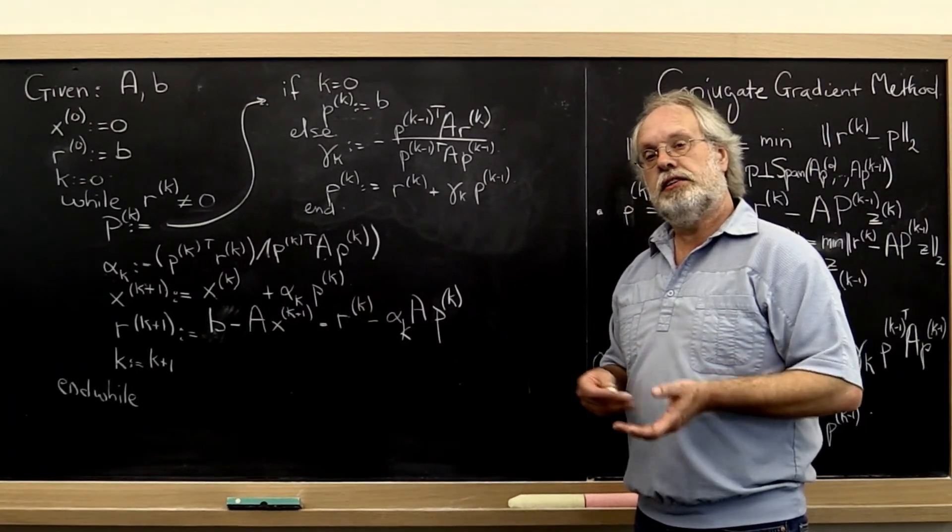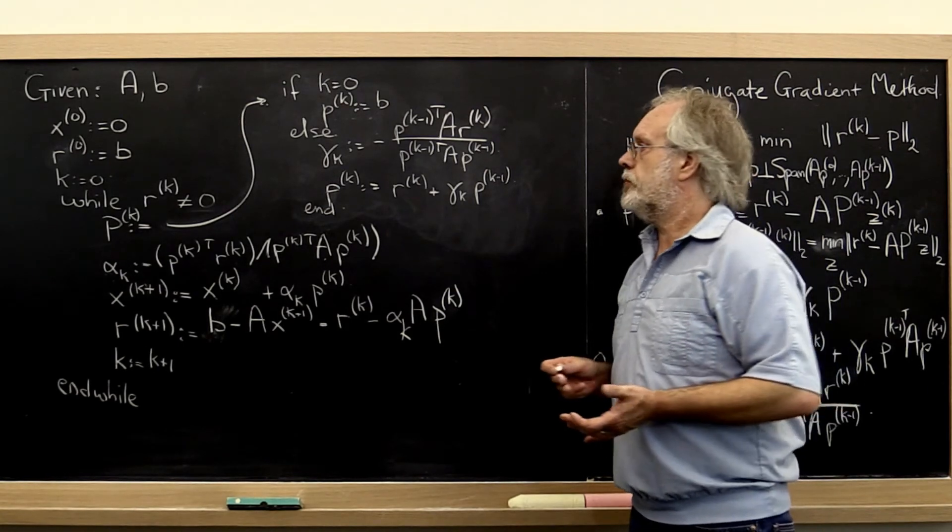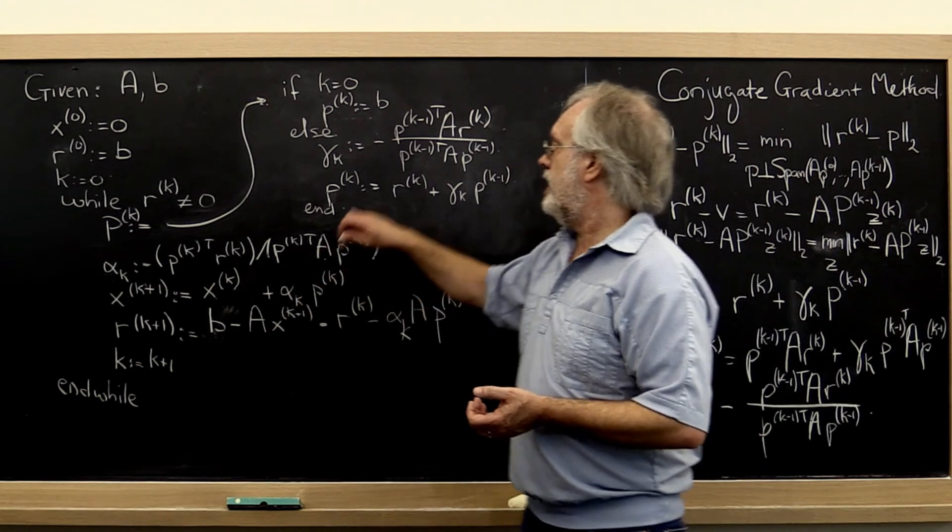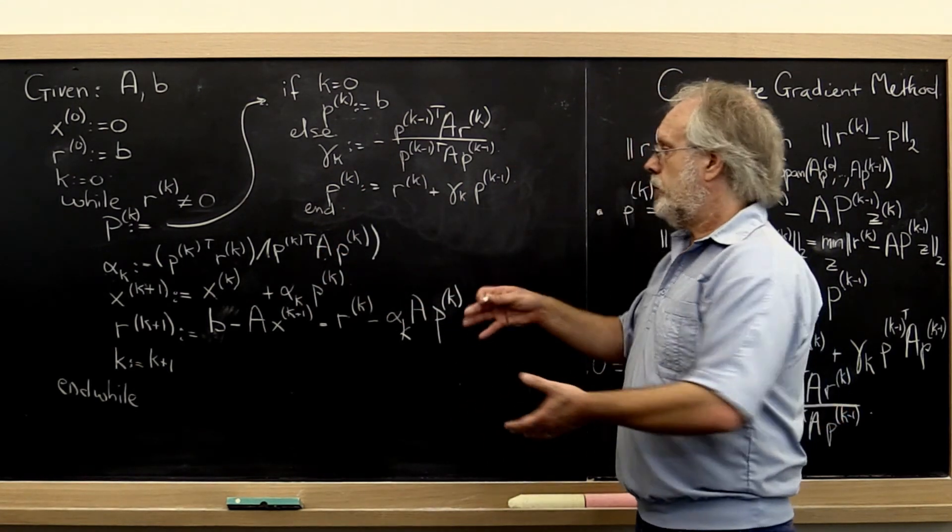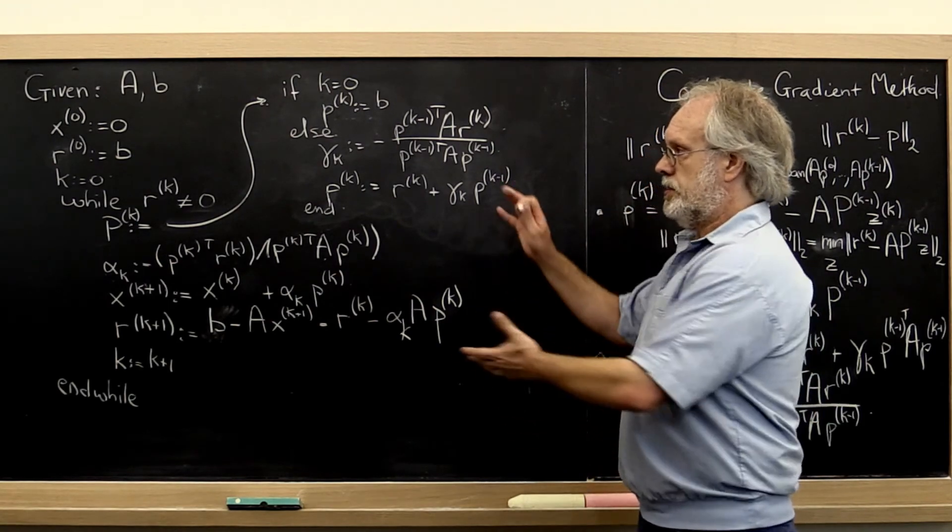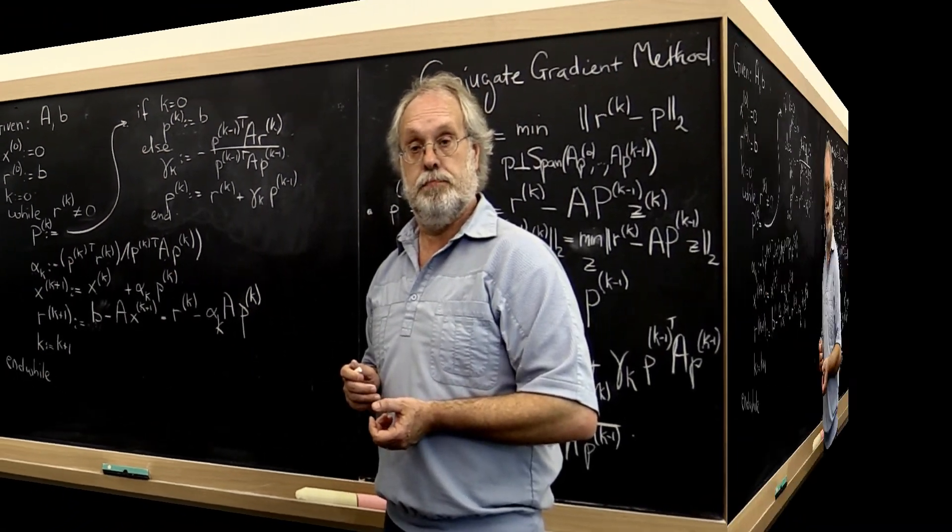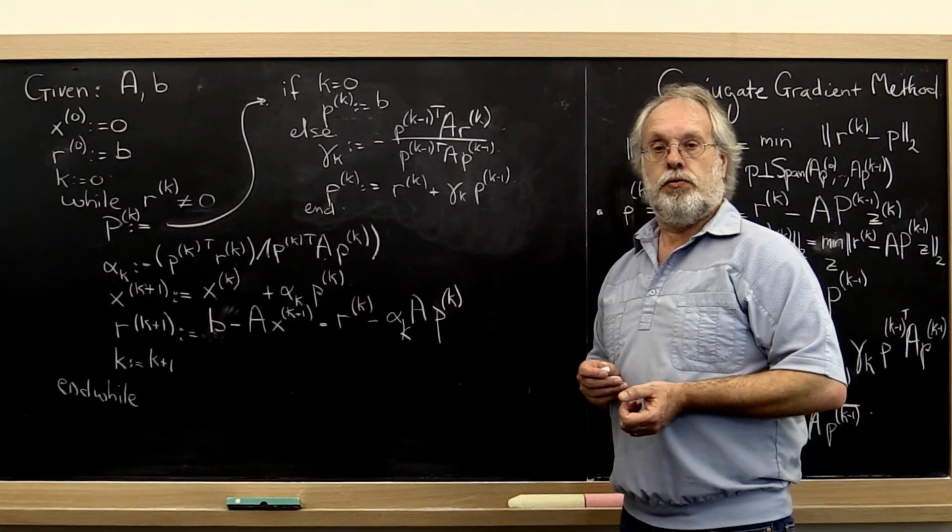Now it turns out that there are some variations on the theme that some people prefer. And that involves computing your alpha_k and your gamma_k slightly differently. But all of those are variations on this conjugate gradient method as we've presented it right here. Now some of those variations you're going to explore through some homeworks.